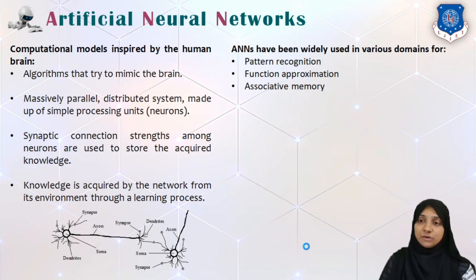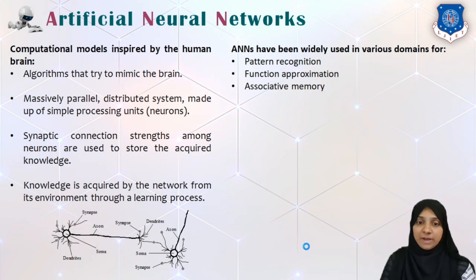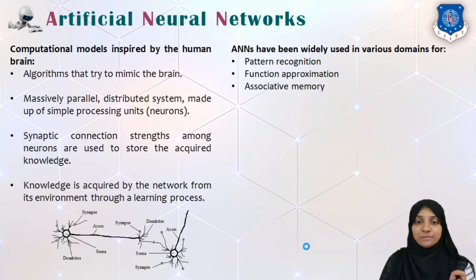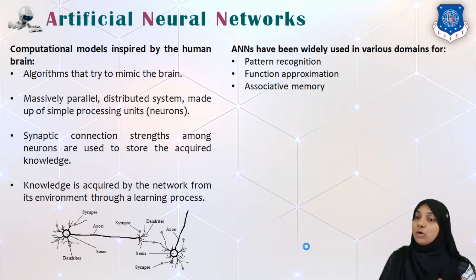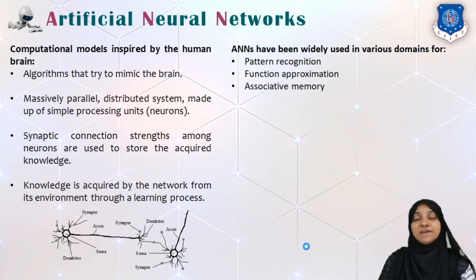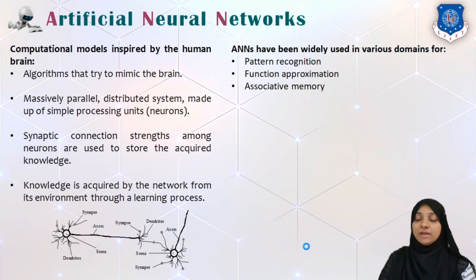Artificial neural networks are actually inspired by the human brain. These are nothing but algorithms which try to mimic or replicate the working of your brain. They are massively parallel and distributed systems which consist of simple neurons, which are the simplest processing units. There are synaptic connections among the neurons which are used to store and acquire knowledge. This knowledge is acquired by the network from its environment through a learning process. ANNs have a wide range of use cases such as pattern recognition, function approximation, and associative memory.